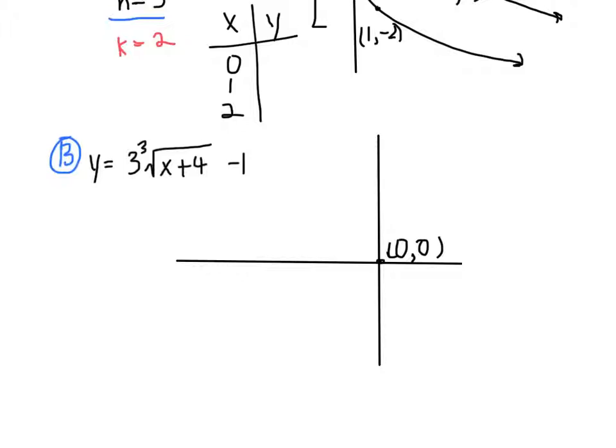And our point negative 1, negative 3. So our graph will look, oh and 1, 3. Excuse me. And then our graph once again will look like this.